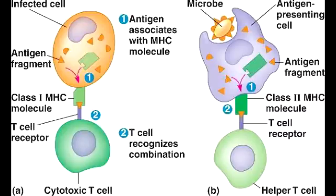What is Major Histocompatibility Complex? Major Histocompatibility Complex, or MHC, is a set of cell surface molecules that are encoded by the human leukocyte antigen gene, or the HLA gene. MHC's major function is to present processed antigen fragments to T-cells and bind T-cell receptors.